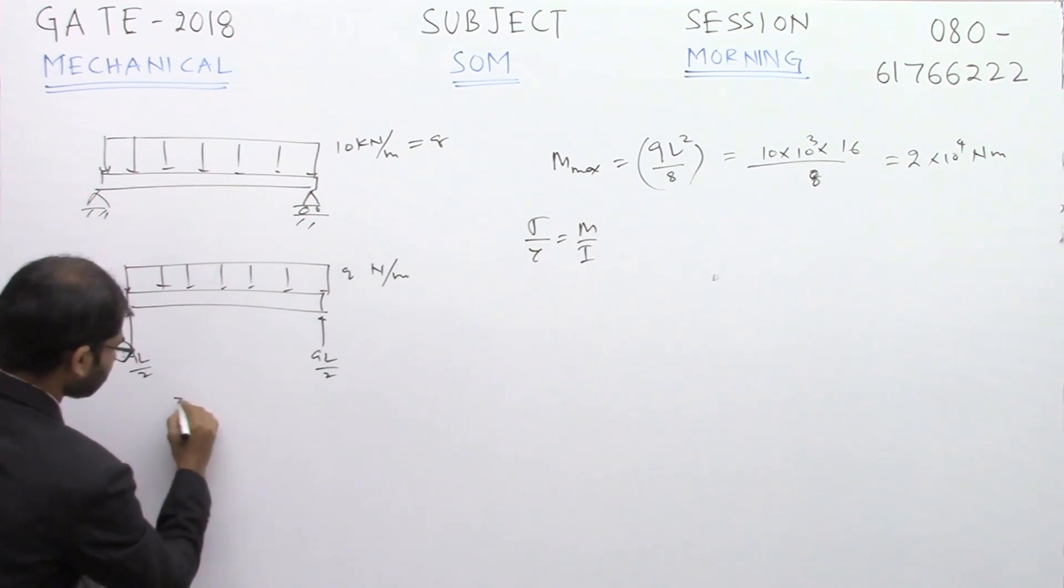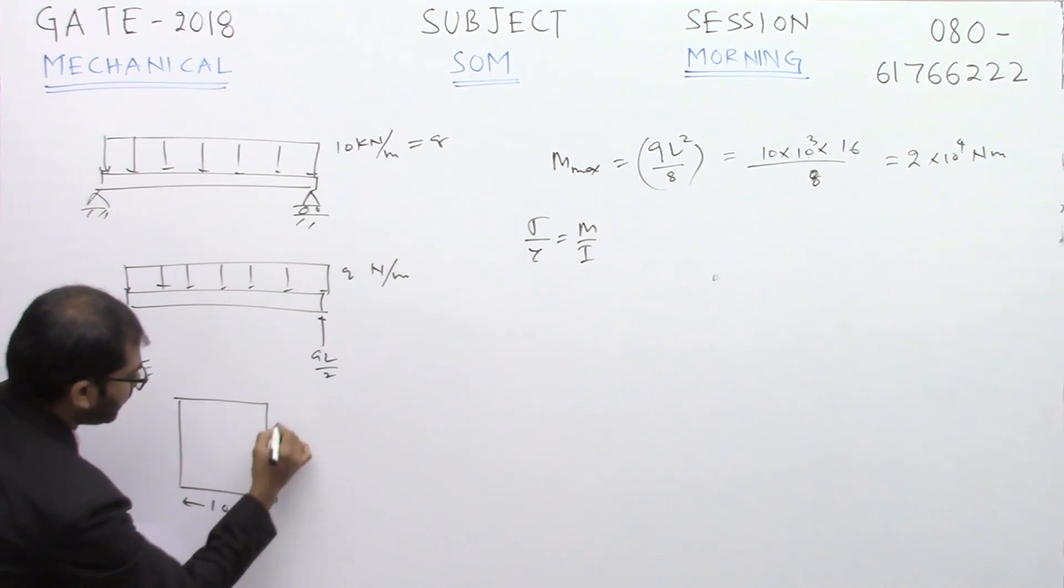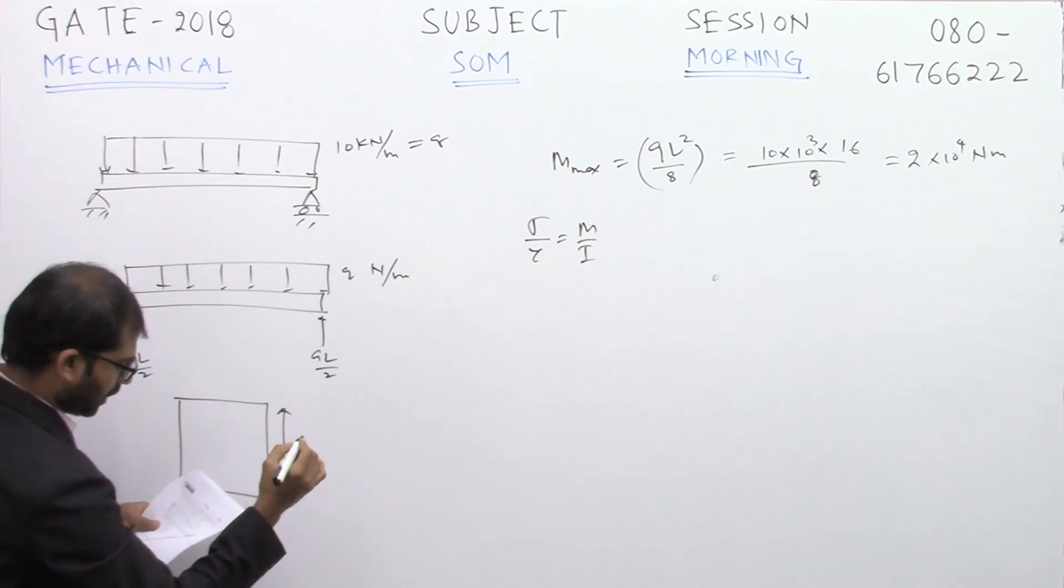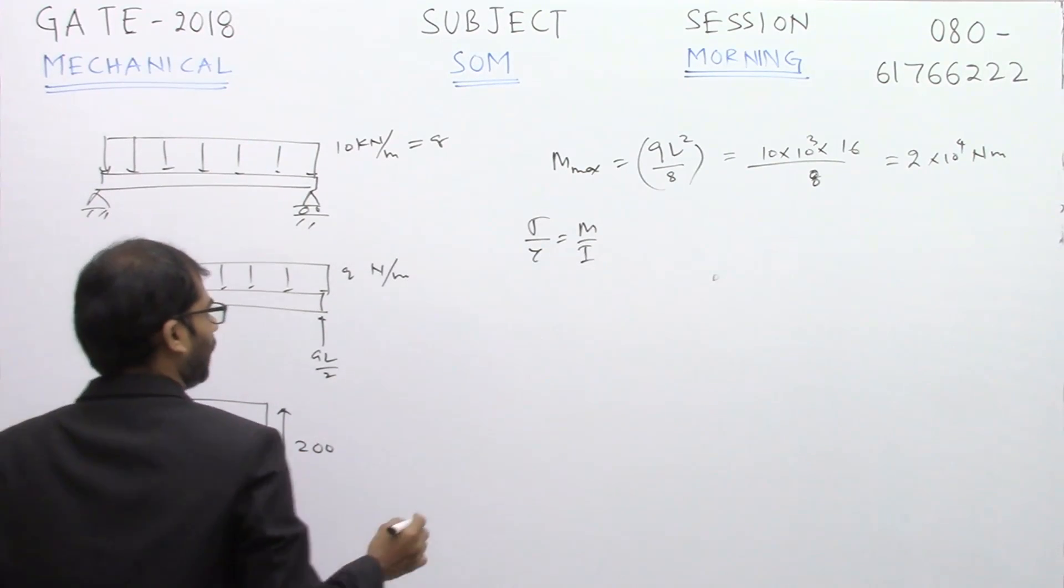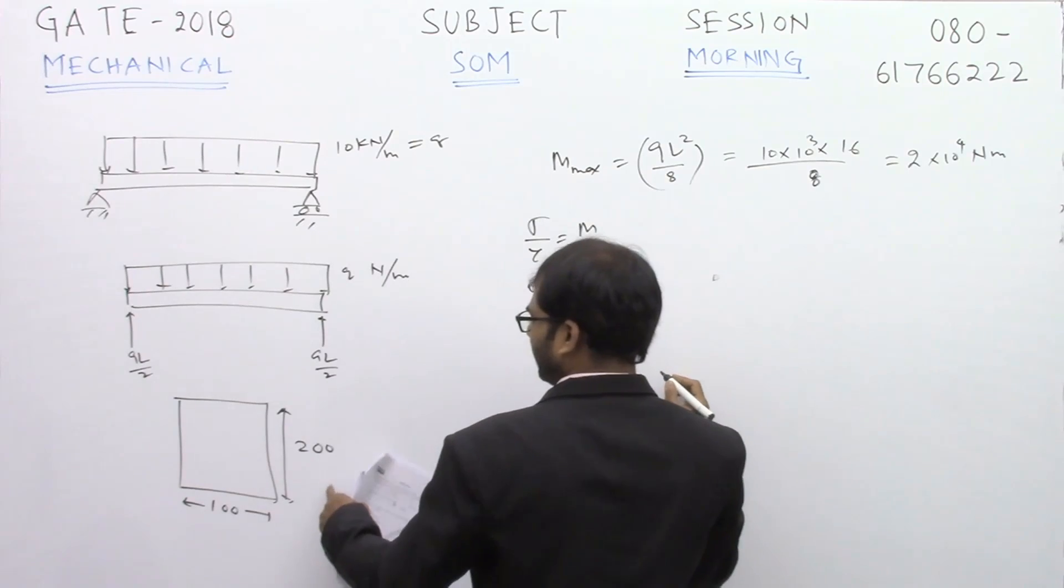As it is a rectangle having a width of 100 millimeters and a depth of 200 millimeters, the y value is given by 0.1 meters - half of 200 millimeters, so 100 millimeters.